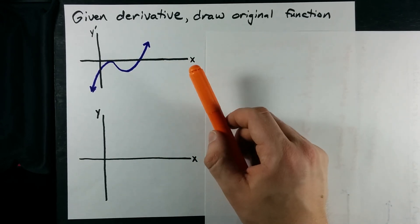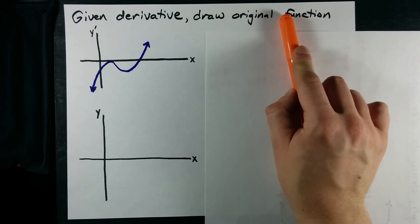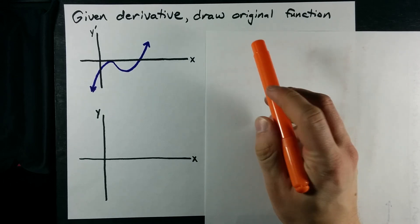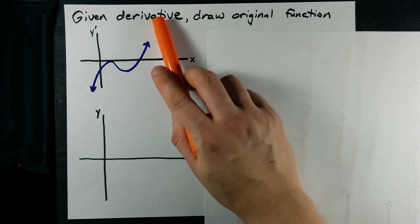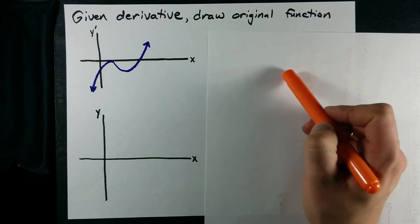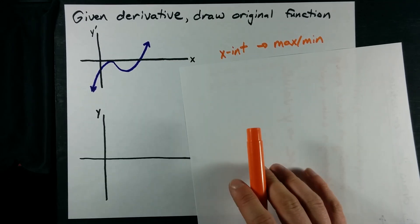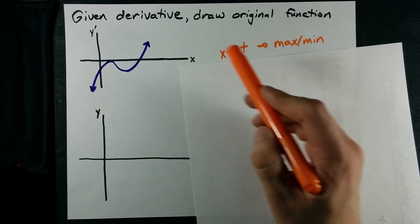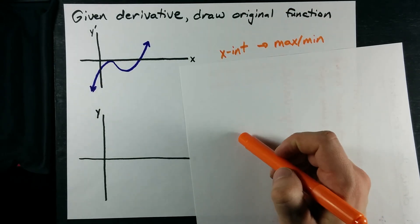What I mean is, if I gave you the original function, wherever it reached a max or a minimum, you know that the derivative is 0 there. So, wherever the derivative is 0, the original function had a max or a min. In fact, x-intercepts on the graph of the derivative become maxes or mins on the original function.